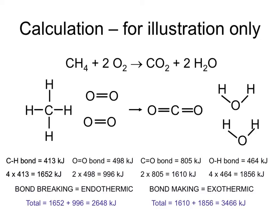When we quantify this, we can see that the amount of energy required to break the existing bonds is 2648 kilojoules, but 3466 kilojoules of energy are given out when the new bonds are made, which is more. Overall then, this reaction would be exothermic by 818 kilojoules because more energy is given out making the new bonds than is required to break the existing bonds.